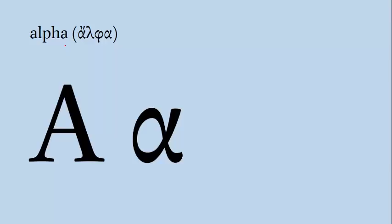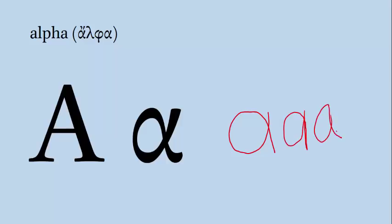This first letter is called Alpha. It makes a short A sound and roughly corresponds to the Roman letter A — that sound as in 'father,' ah. To draw an uppercase Alpha, I draw it just like an uppercase A. For a lowercase alpha, I tend to start halfway up the line, loop down, around, and back down, so you end up with two little tails there. An example of a Greek word with the letter Alpha is the verb 'grapho,' which means 'I write.' You can hear the Alpha in the middle there.